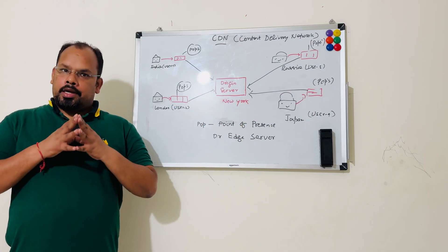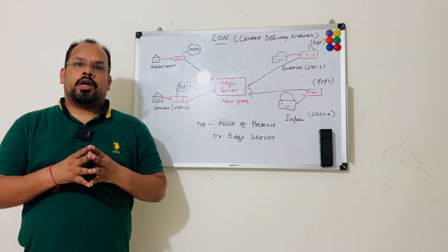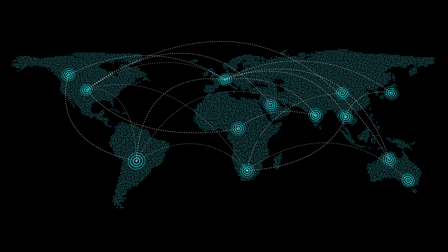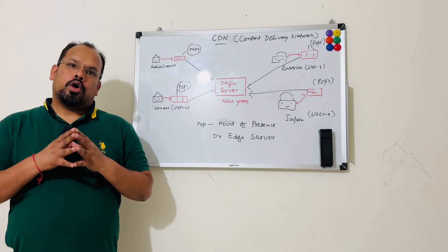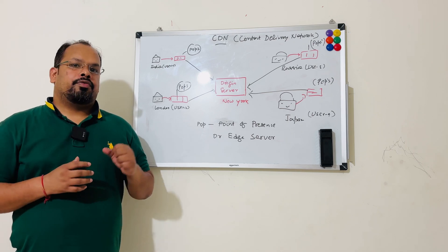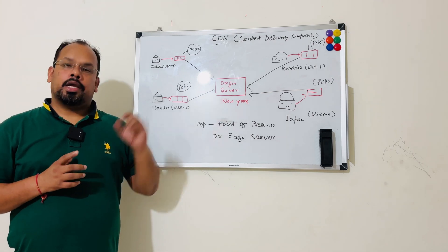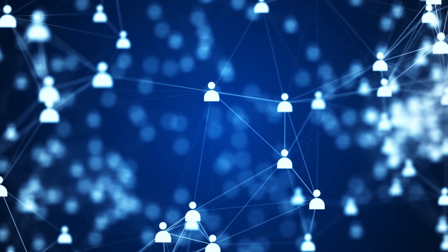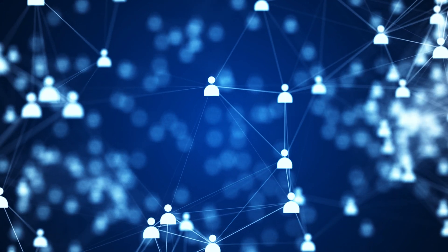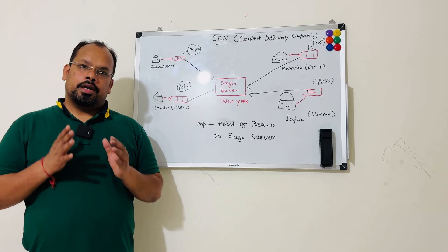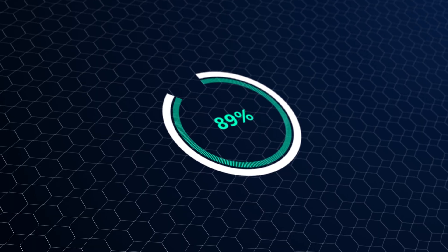CDN is a network of geographically distributed servers which deliver content to end users quickly. Instead of using a single origin server, CDN caches the data on CDN servers, by which content is delivered quickly — or we can say latency will be less.